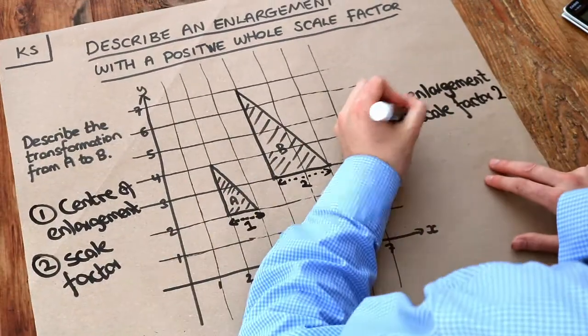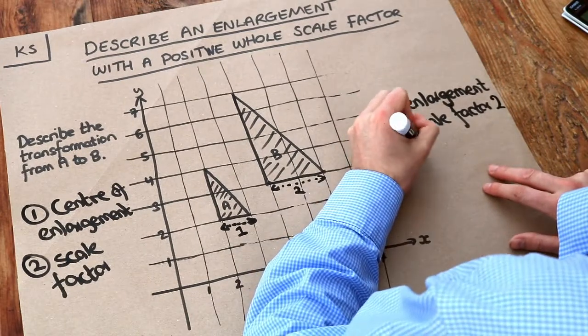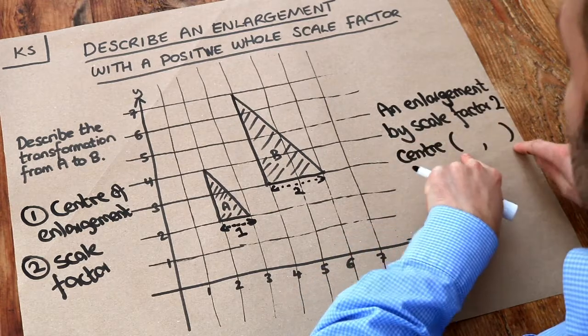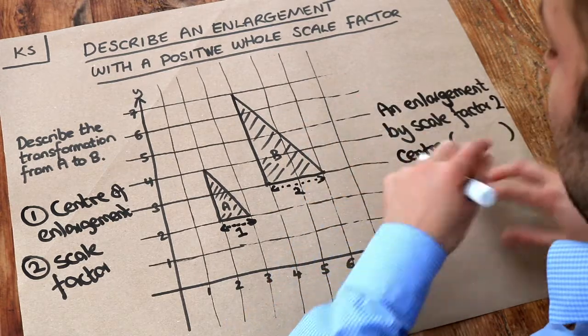Now we need to identify the center of enlargement. So we just write center. And then we're going to give the coordinate where the center is. Remember coordinates are always in brackets. I don't know why students always forget these brackets. But they often do.